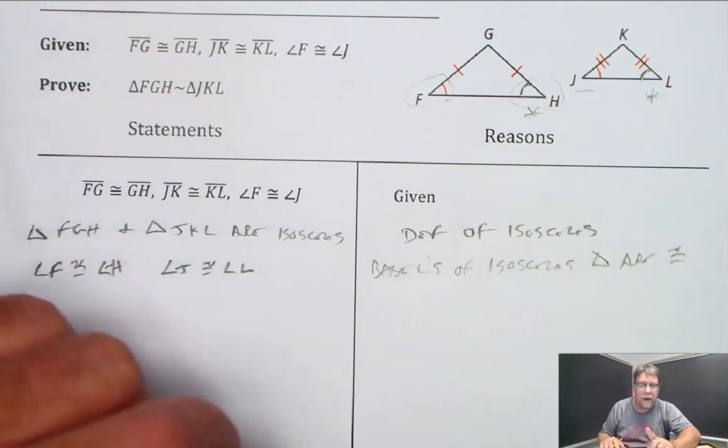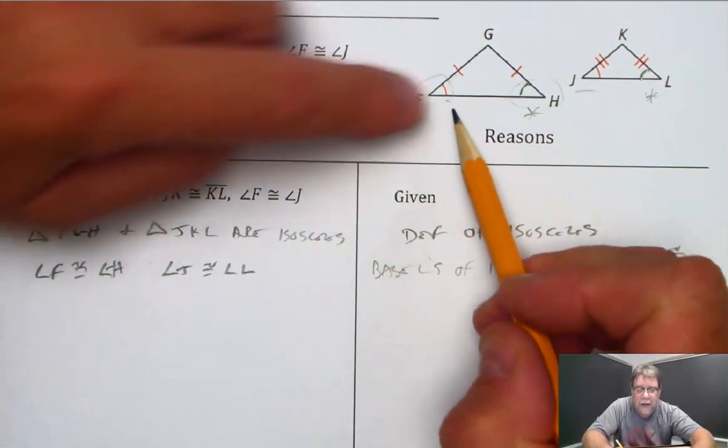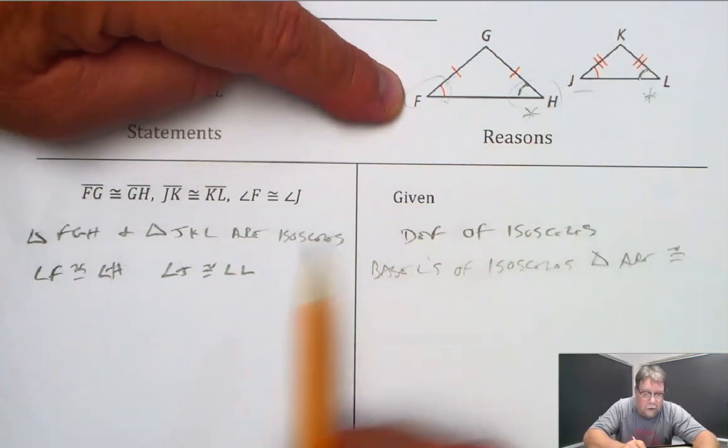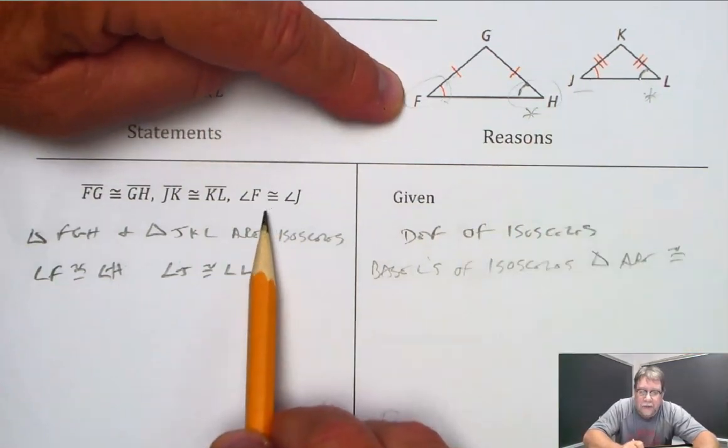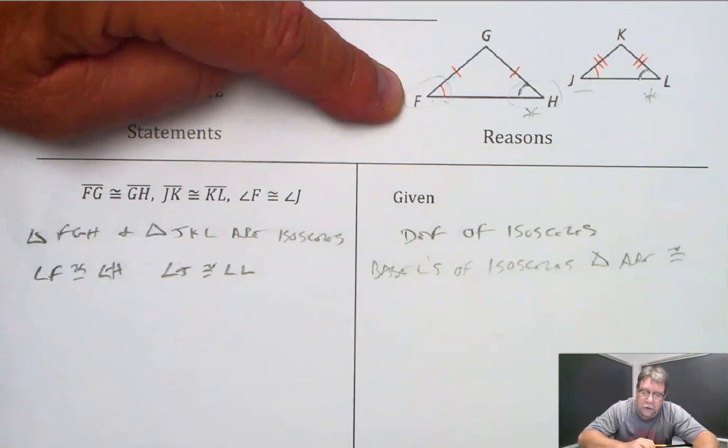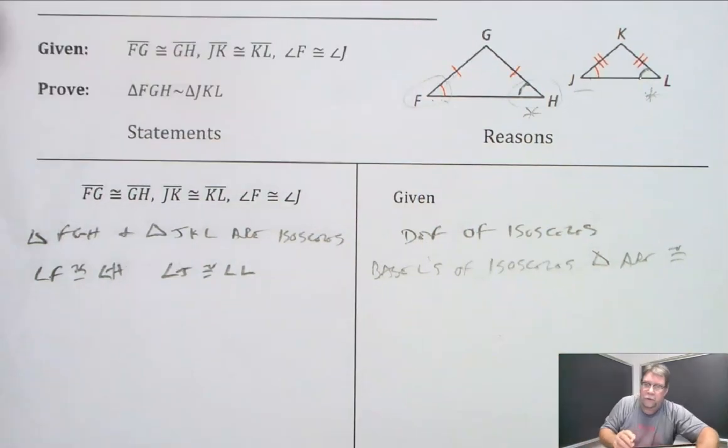But I can use the transitive property because think about it. I know that angle F and angle J are congruent. It says so right there. And I know that angle F and angle H are congruent. So here's what I'm going to write.